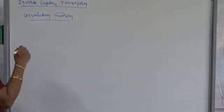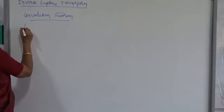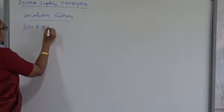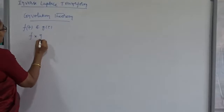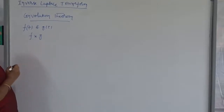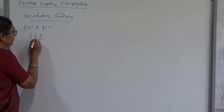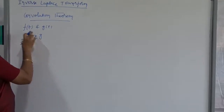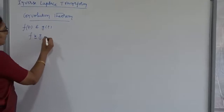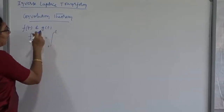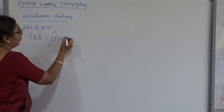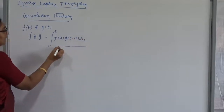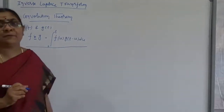Let us consider what is a convolution of 2 functions. Suppose f and g are functions of t. The convolution between 2 functions f and g — denoted by the star notation f*g — is defined as the integral from 0 to t of f(u) into g(t minus u) with respect to u. This is the definition of convolution of 2 functions.